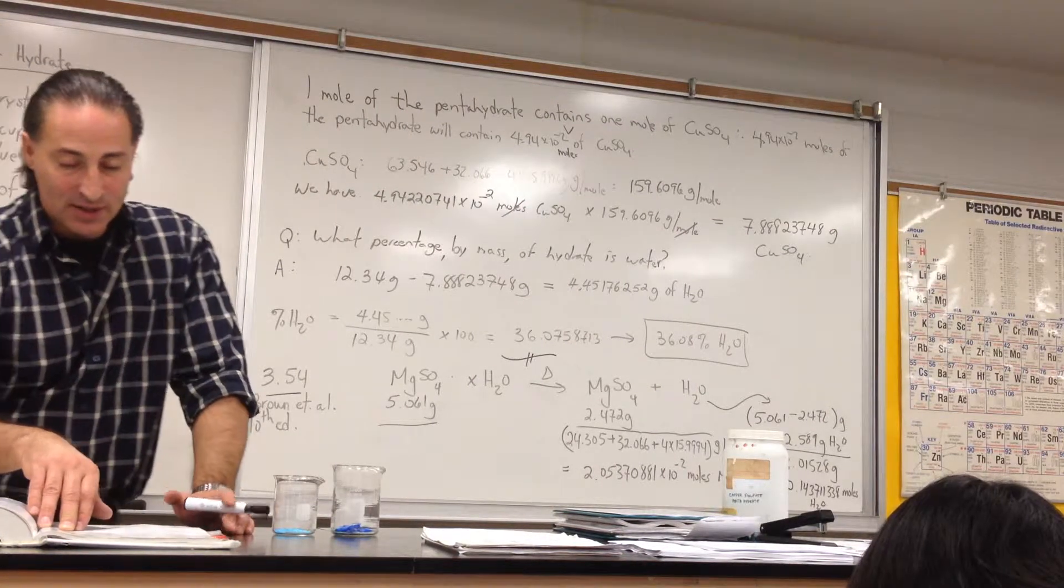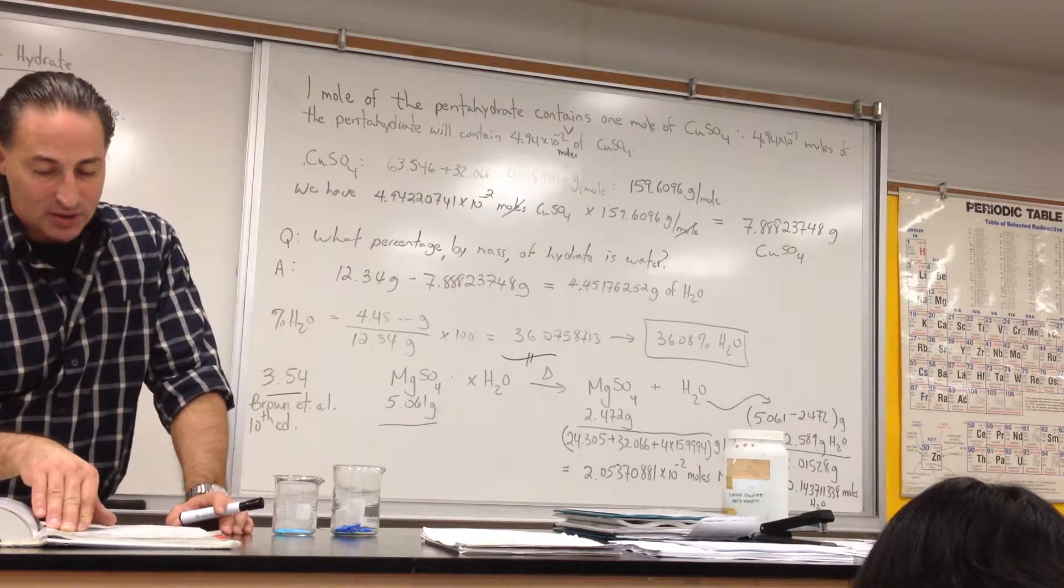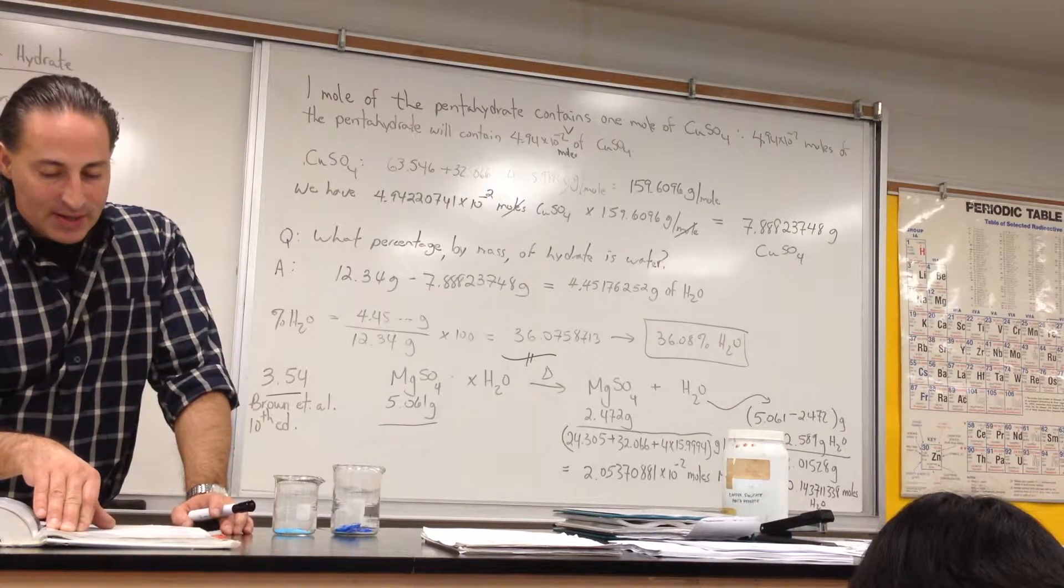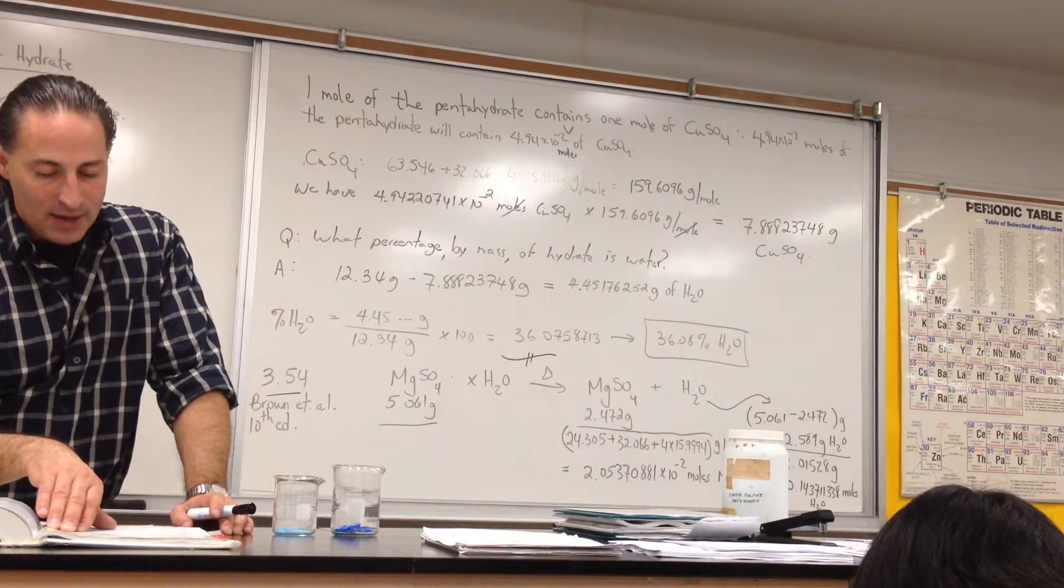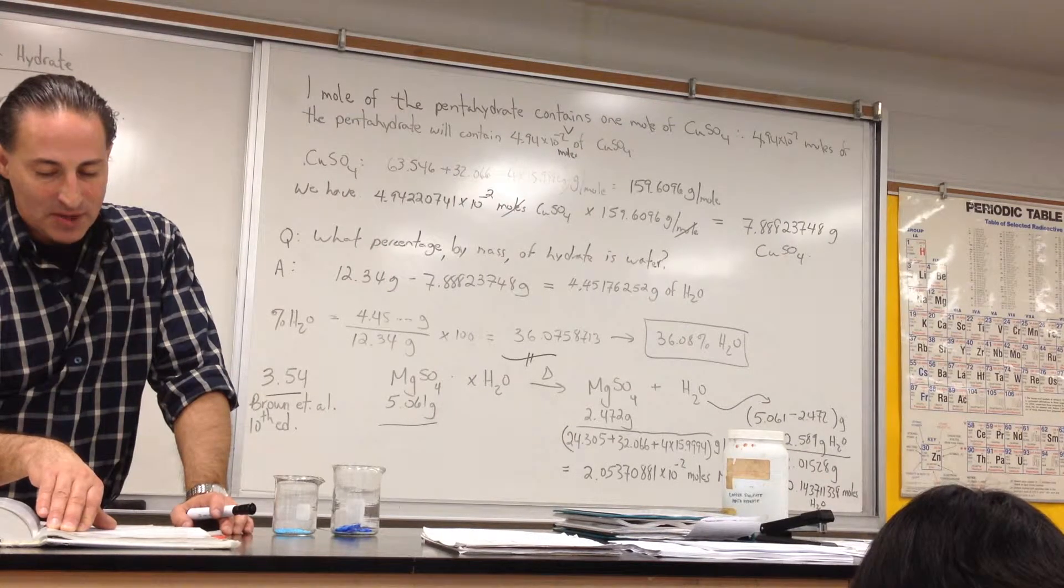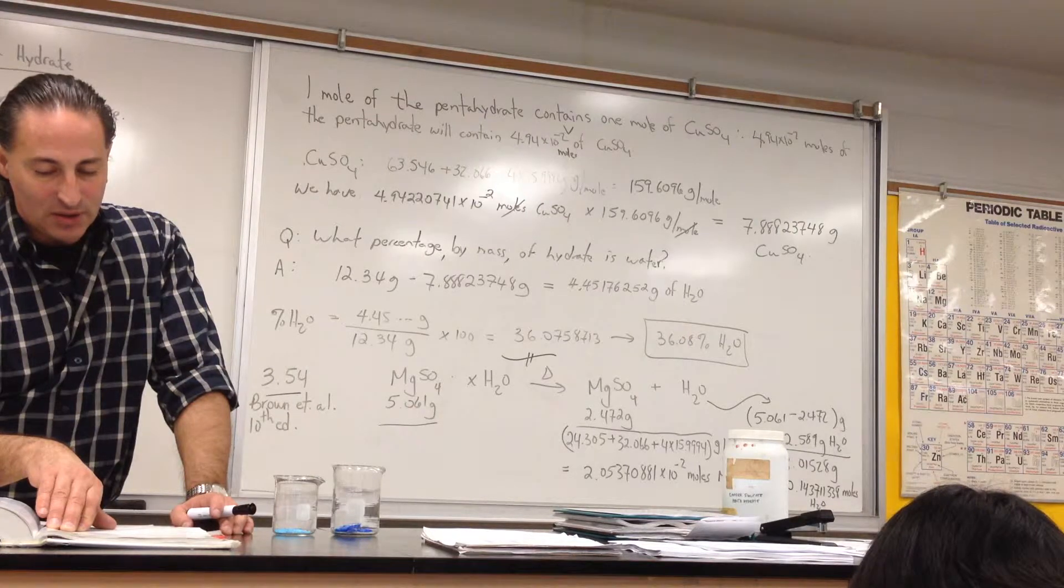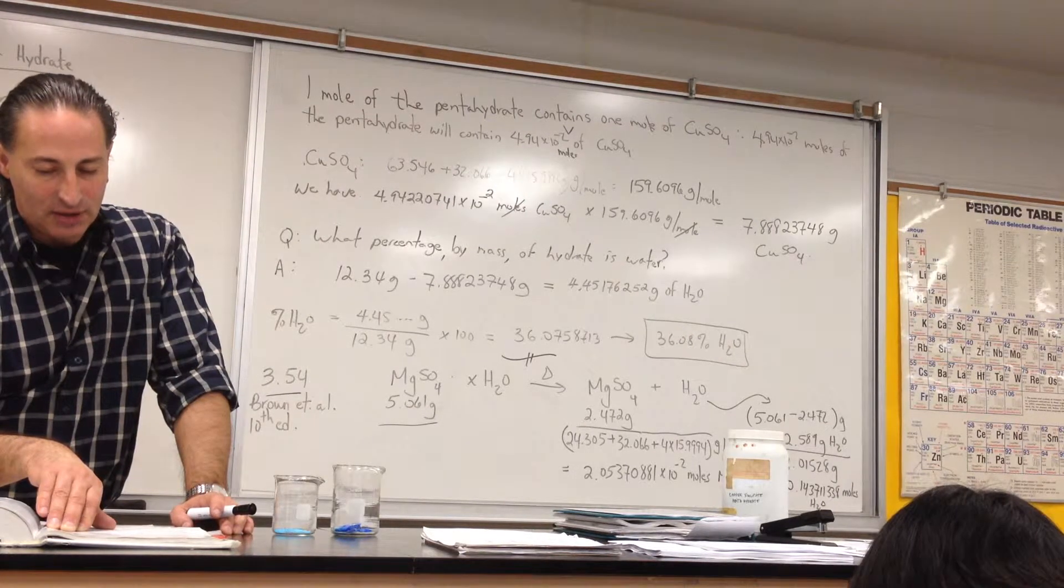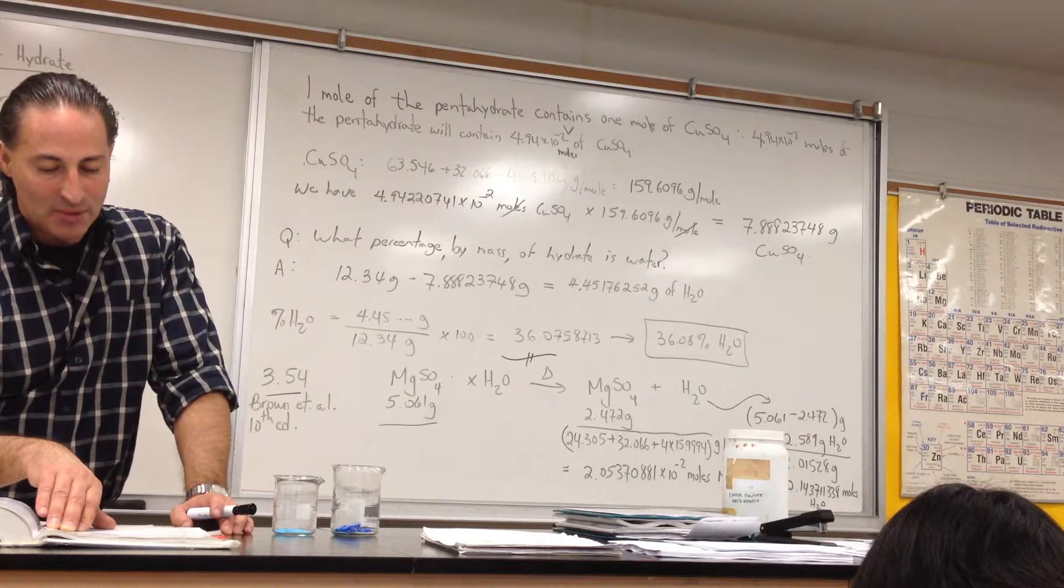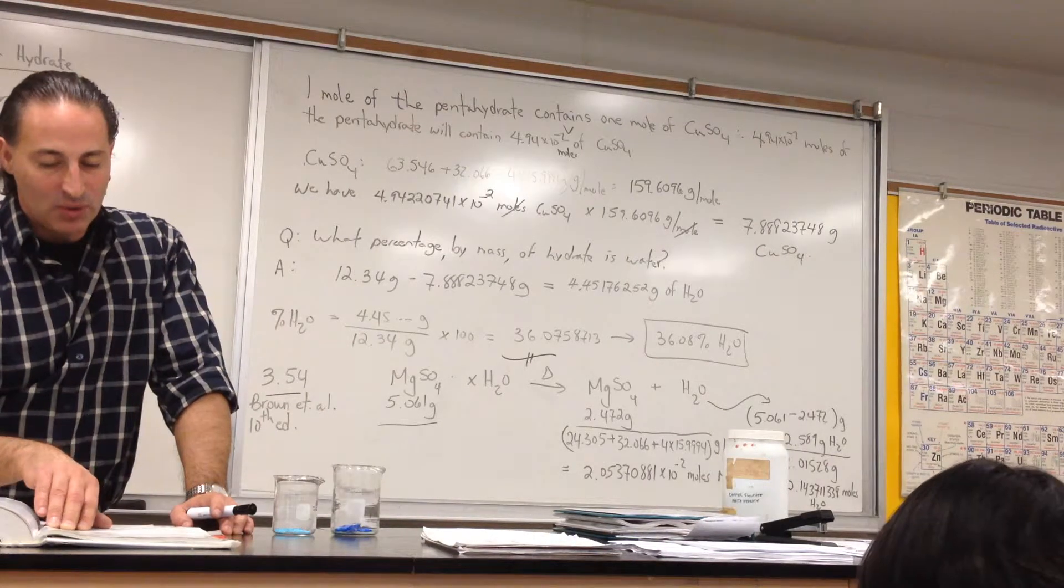Where X indicates the number of moles of H2O per mole of magnesium sulfate. When 5.061 grams of this hydrate is heated to 250 degrees Celsius, all the water of hydration is lost, leaving 2.472 grams of magnesium sulfate. What is the value of X?